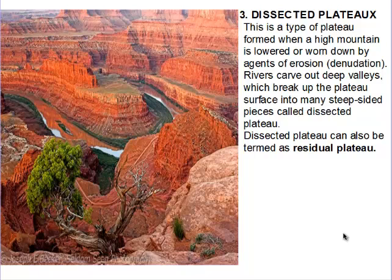Rivers carve out deep valleys which break up the plateau surface into many steep-sided pieces, called a dissected plateau. Just as residual mountains are formed from other mountains, so too are dissected plateaus — they are formed from other plateaus.